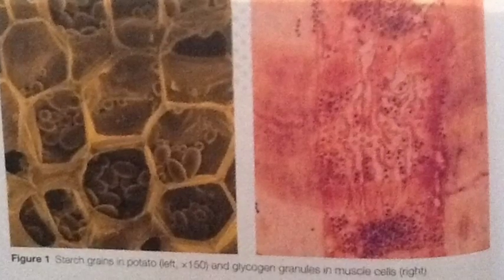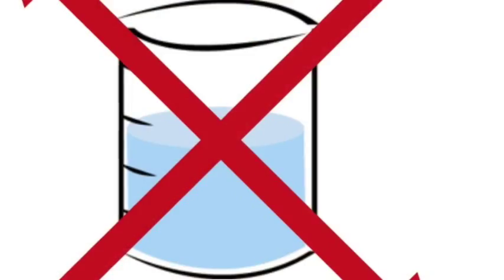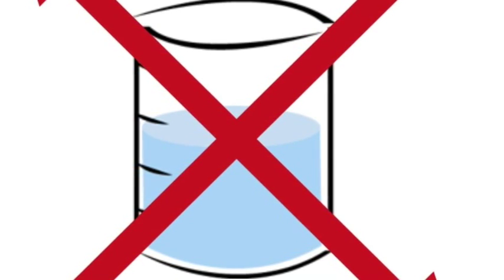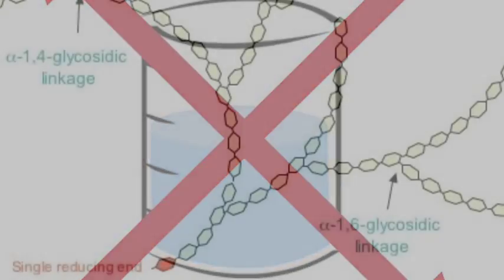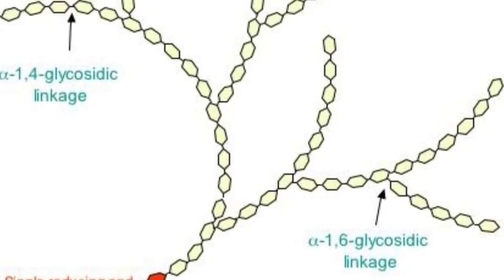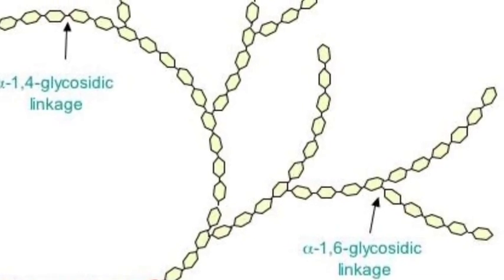Starch and glycogen are both energy storage molecules. They do not dissolve, so the stored glucose does not affect the water potential of the cell. They also hold glucose molecules in chains so that they can easily be broken off from the ends to provide glucose for respiration when it is required.